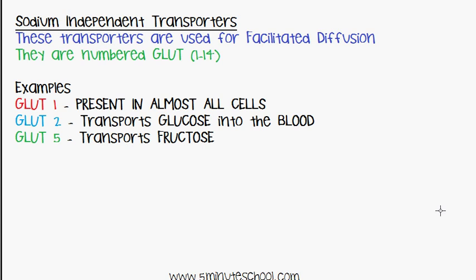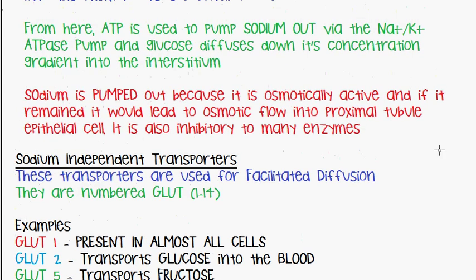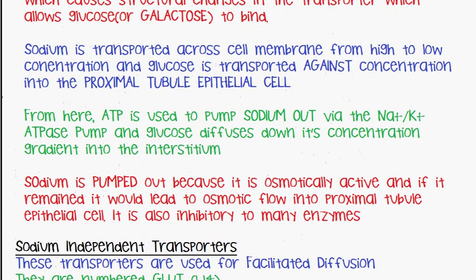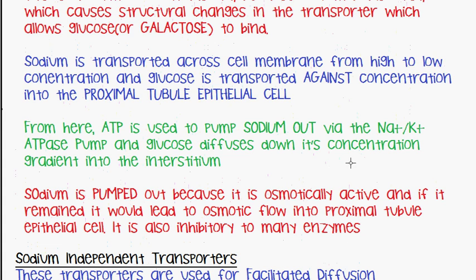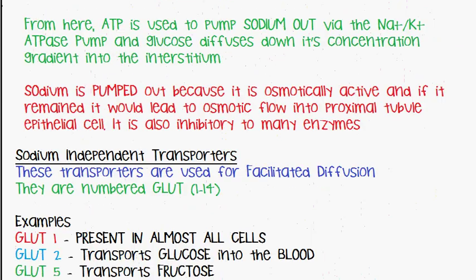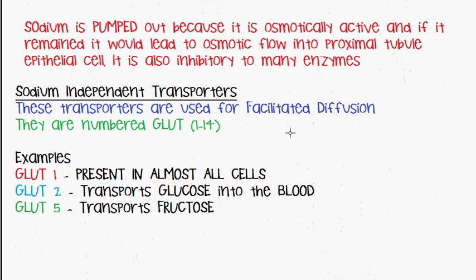These are basically channel proteins which allow glucose or various monosaccharides to pass through. GLUT5 has a high affinity for fructose. As discussed earlier, glucose passes out down its concentration gradient while sodium is being pumped out. Glucose diffuses down its concentration gradient using a sodium-independent transporter.